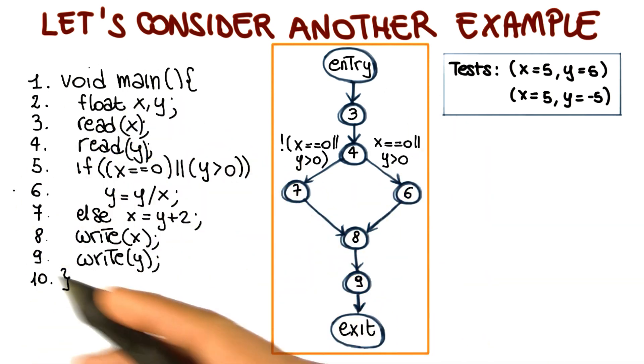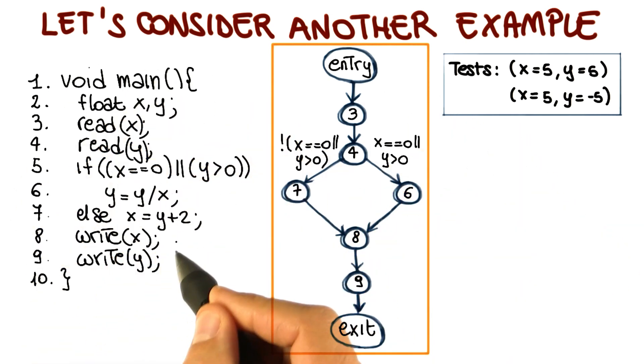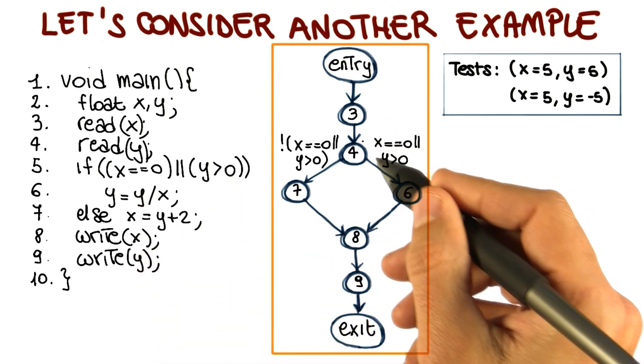If we consider branch coverage for this code, and we consider the two test cases, for the first one, this condition is true because x is not equal to 0, but y is greater than 0. And therefore, we will follow this true branch.